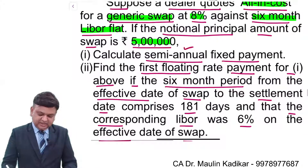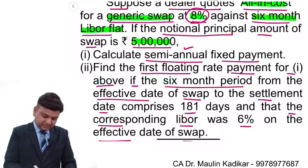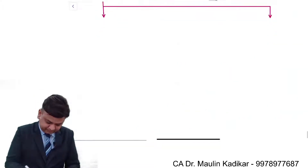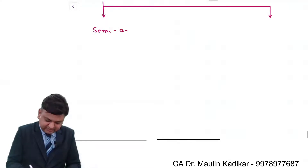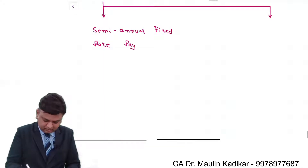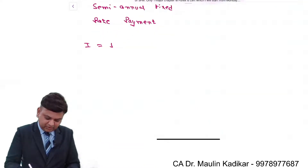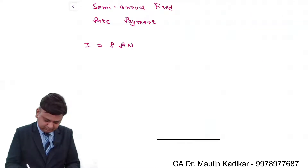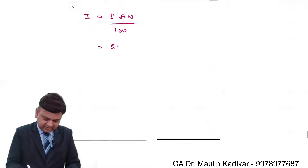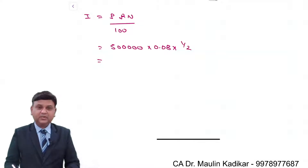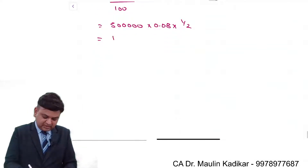For the semi-annual fixed rate payment, interest I = P × R / 100. The principal amount is 5 lakhs, the fixed rate is 8%, and since it is semi-annual it is multiplied by 1/2. So 8% of 5 lakhs equals 40,000, multiplied by 1/2 gives Rs. 20,000.